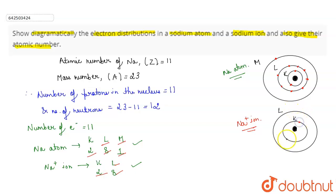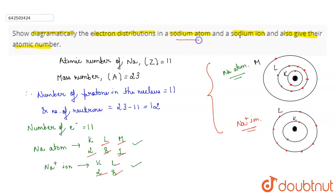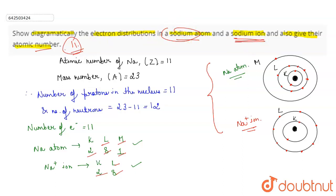This is the diagrammatic representation of electronic distributions in both sodium atom as well as sodium ion. Now, since the sodium atom and the sodium ion contain the same number of protons, the atomic number of both the sodium atom as well as the sodium ion will be 11.